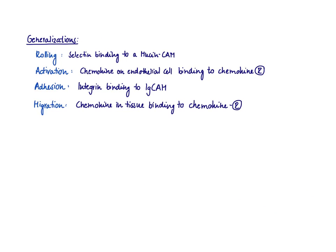We have now discussed how a neutrophil gets to the site of infection. But as mentioned in the beginning, extravasation is a general process for any white blood cell that needs to leave the blood to get to the tissue. There are always going to be those four steps: rolling, activation, adhesion, and migration.